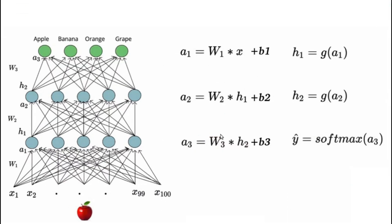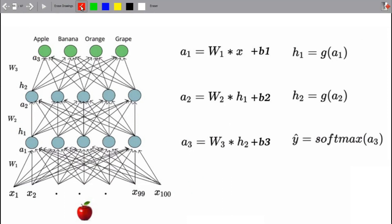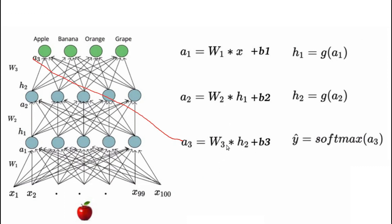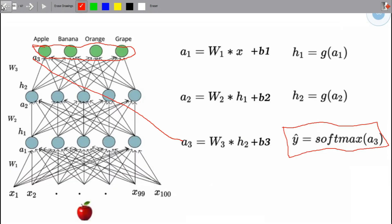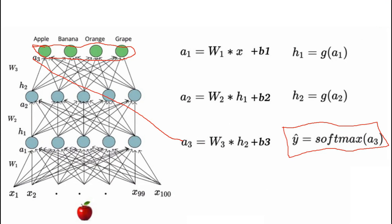Now we have a1 = w1x plus b1. a2 = w2 into h1 plus b2. a3 = w3 into h2 plus b3. y_hat is equal to softmax of a3.